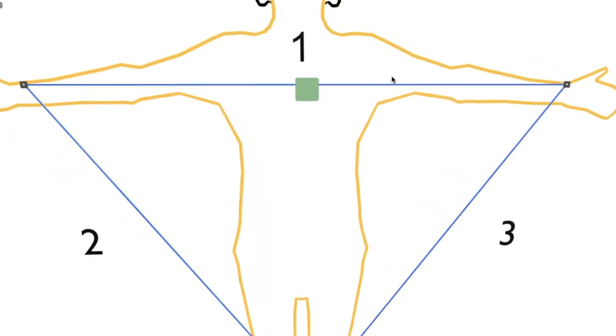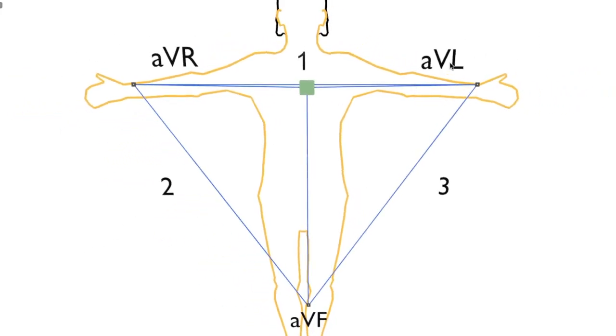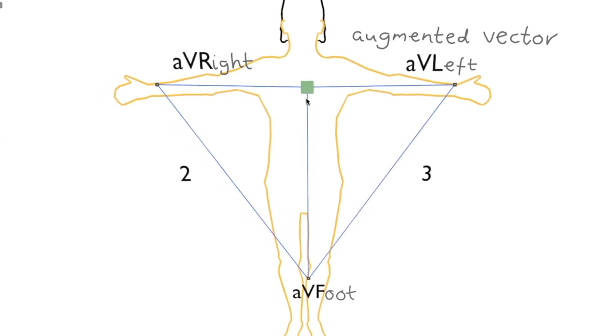And we can then use that imaginary electrode as a basis to calculate further leads. We can determine the voltage between here and here, for example. Here and here, and then here and here. And these leads are called AVF, AVL, and AVR, which stands for augmented vector foot, augmented vector left, and augmented vector right. They are augmented by their use of this imaginary central electrode.